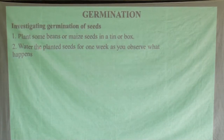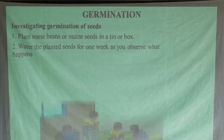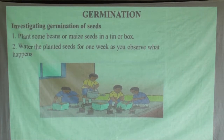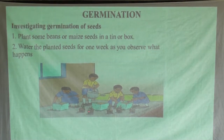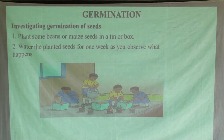Having done that step, water the planted seeds for one week as you observe what happens. This can actually help us see how this process of germination works. You can see in the picture here — these are school pupils who planted their seeds in a box or tin. After some time, these seeds germinate. You can see the younger plants here. They are watering the plants, and after a given time these seeds had to germinate. You can see the younger plants.